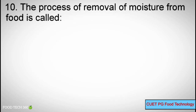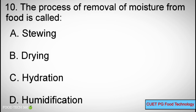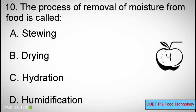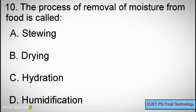Question number 10. The process of removal of moisture from food is called: Options: A. Stewing, B. Drying, C. Hydration, D. Humidification. Correct answer: B. Drying.